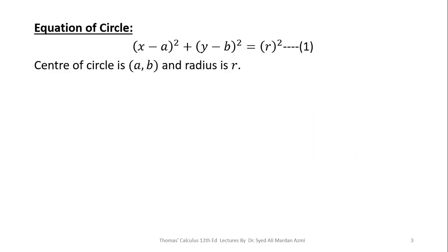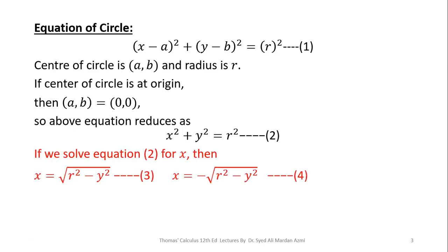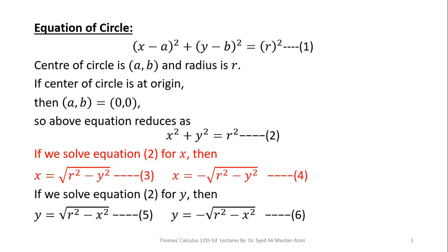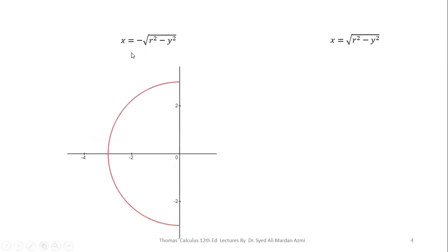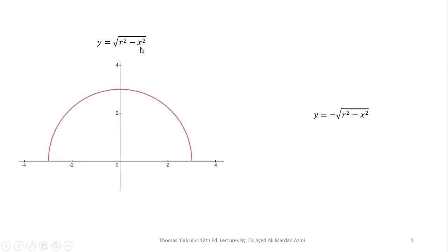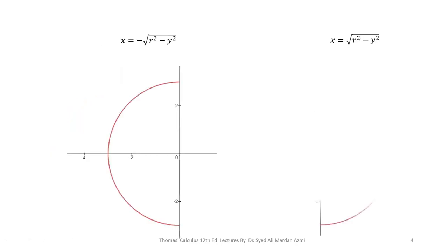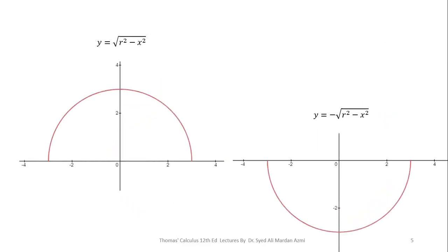This is the equation of a circle in general form. If we take the center of the circle at the origin, then the equation reduces to x squared plus y squared equals r squared. Solving for x gives us two equations, and solving for y gives two more. x equals the negative square root of r squared minus y squared is a semicircle in the left half plane. x equals the positive square root is a semicircle in the right half plane. y equals the positive square root of r squared minus x squared is a semicircle in the upper half plane, and y equals the negative square root is a semicircle in the lower half plane. All these semicircles have center at the origin, (0, 0).